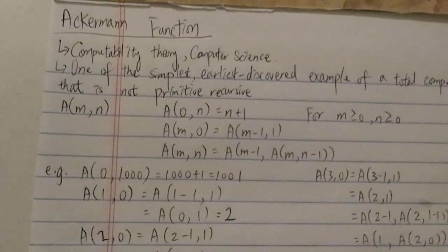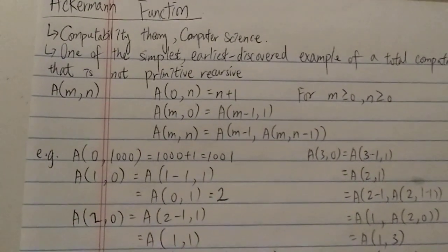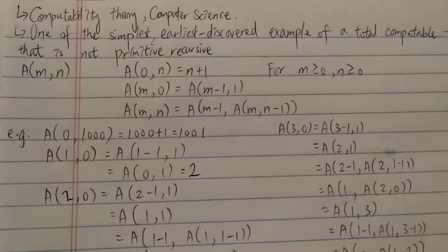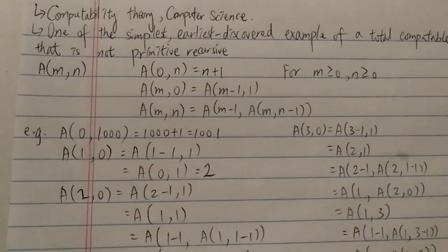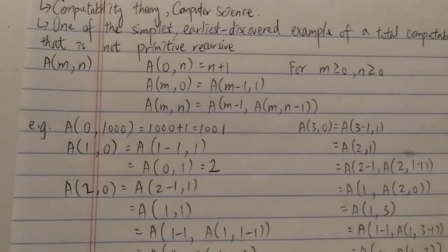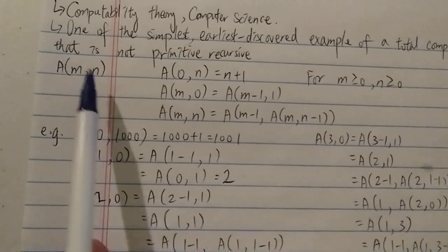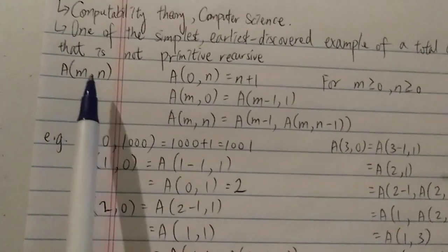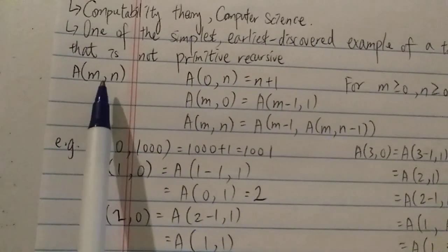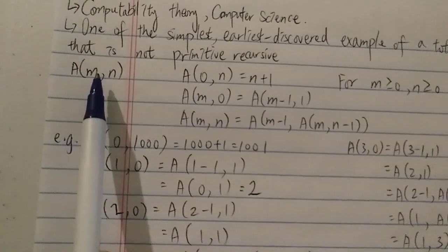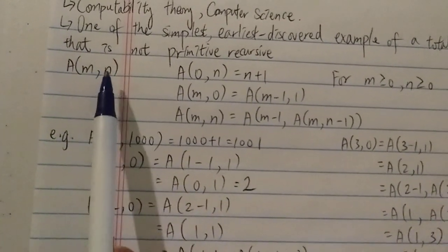So the Ackermann function is above that level, but it's still computable. Its definition or basic form is written as A(M, N).